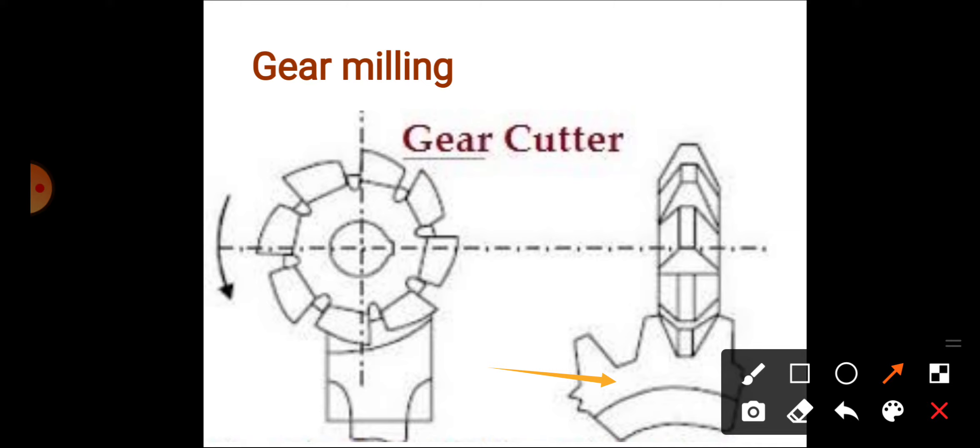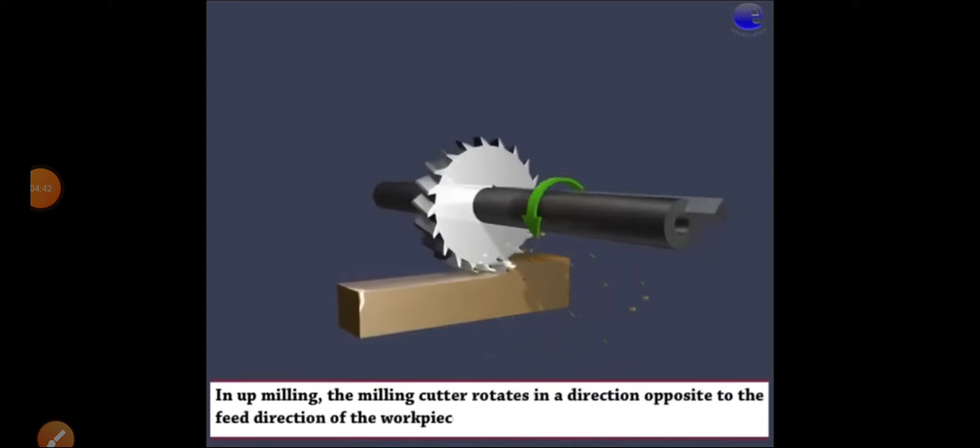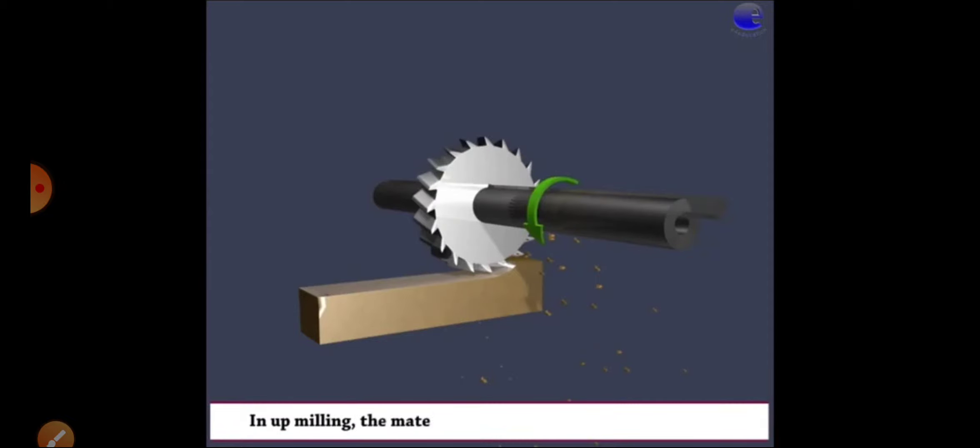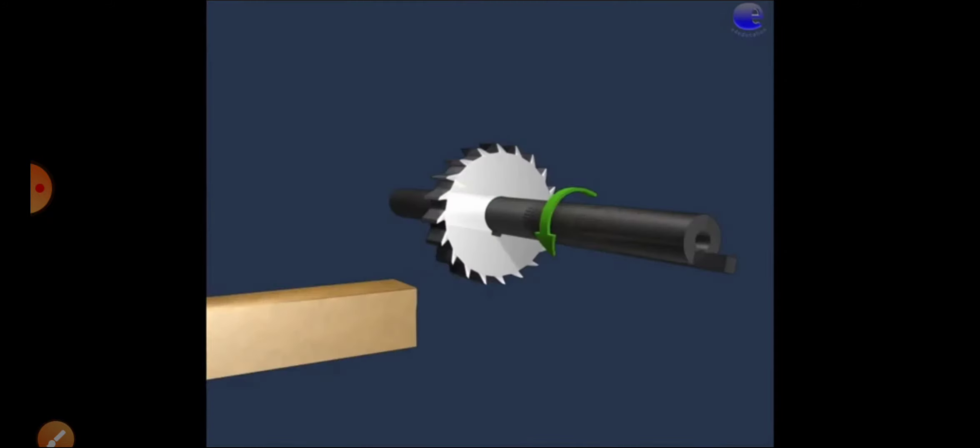Now we will see all these milling operations with the help of animations. This is the plane milling operation which is of two types: up milling or down milling. In up milling, the cutter rotation and work piece direction of movement are opposite. In down milling, the cutter rotation direction and work piece movement are the same. These both are plane milling.